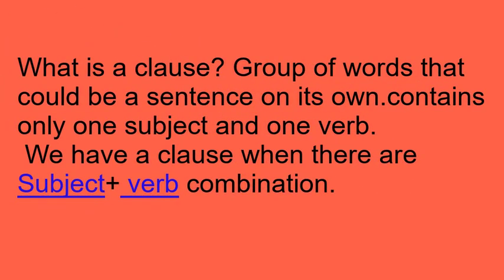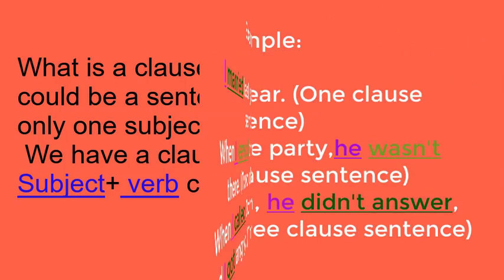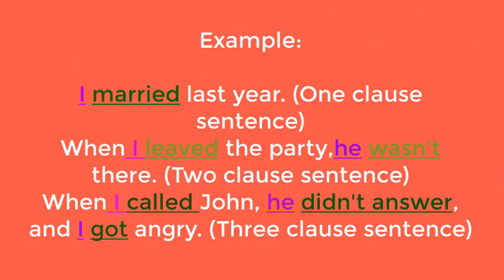What is a clause? A clause is a group of words that could be a sentence on its own. It contains only one subject and one verb. We have a clause when there is a subject plus verb combination. For example, 'I married last year' is a one-clause sentence because there is one subject — 'I' — and one verb — 'married'.